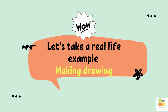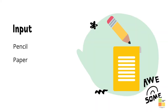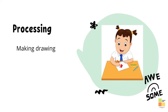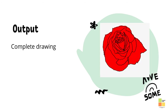Let's take another real-life example: making a drawing. The input is pencil and paper. The processing is making the drawing. The output is the complete drawing.